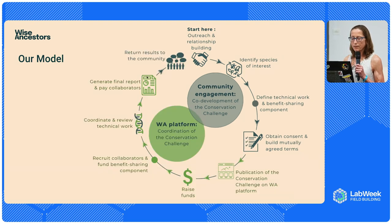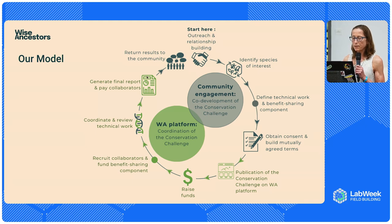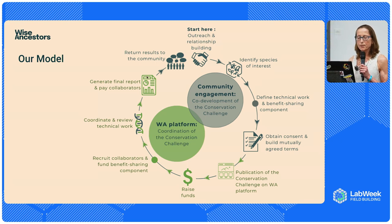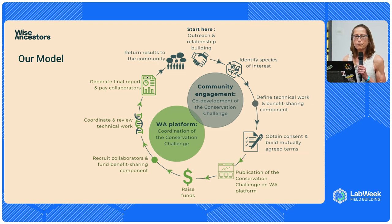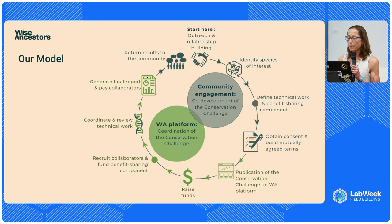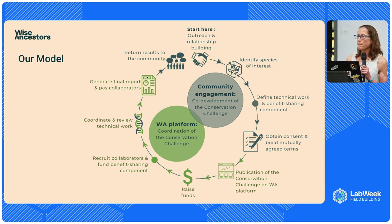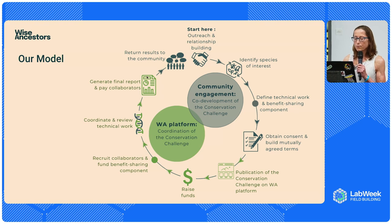After the community engagement and project co-development stage is complete, we post the conservation challenge on our platform along with the funding needed to carry it out, and we run a fundraising campaign. Once the funds reach the target amount, we fund the benefit-sharing project and open the challenge for potential collaborators to apply to perform the various phases of the work — sampling, sequencing, biobanking, bioinformatic analysis, and all phases of these projects. Once we've assembled the scientific team, we give them the green light to get started, and as each phase is completed, the collaborator uploads results for our review. As each phase is completed satisfactorily, we release the funds to pay that collaborator.